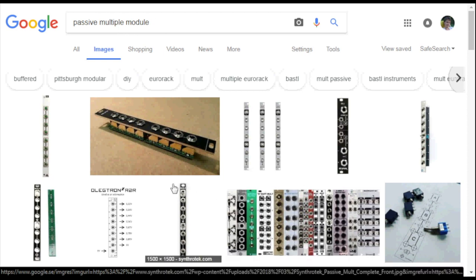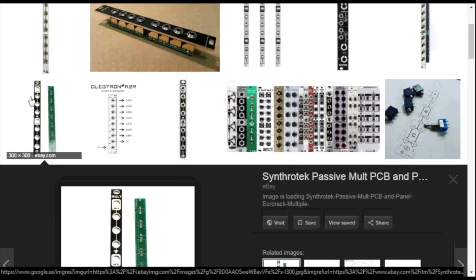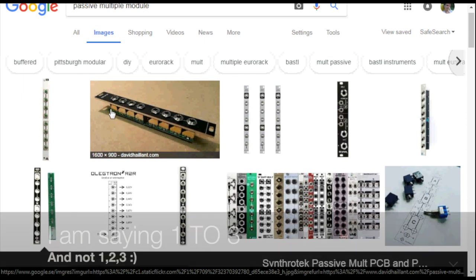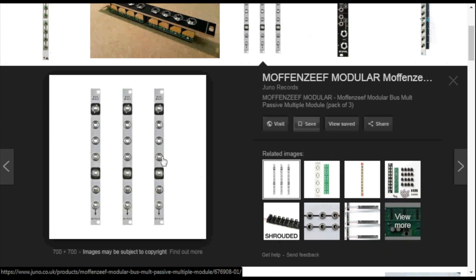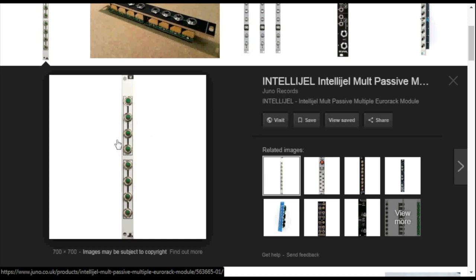The Doepfer A-180-2 is one of them. Here is one that is similar and you can see the PCB is technically just holes for the jacks to be set and there's no circuitry at all except the jacks. Different factories do different ways. Here we have one module with two parts: one two three and one two three. The same you can see in this one here.